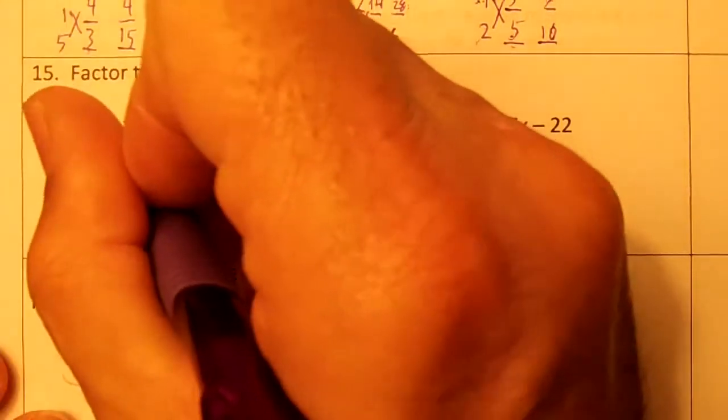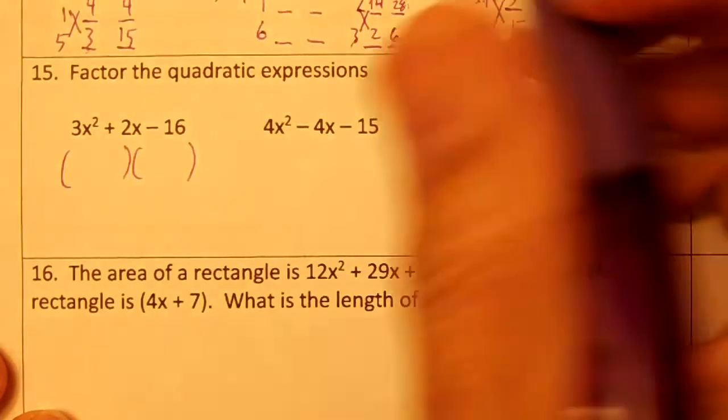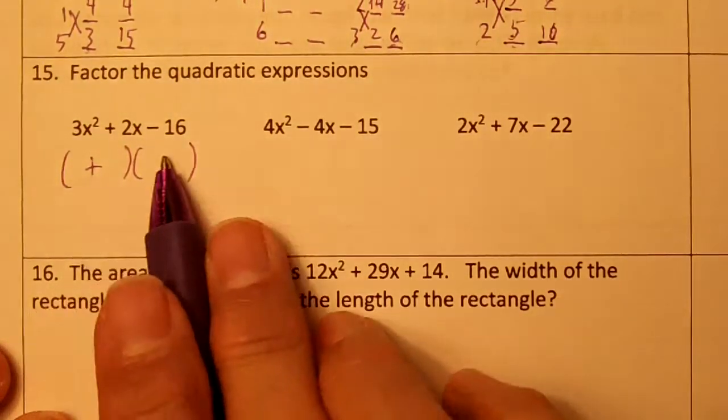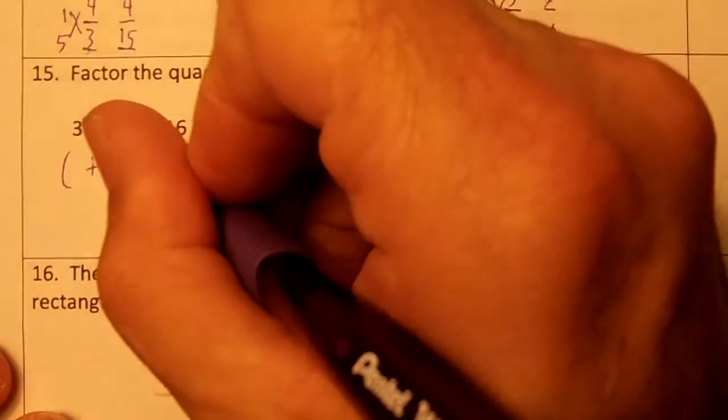We're going to draw the two parentheses. The first sign will be plus. This minus means it'll be different. We have to subtract, so the second sign will be minus.